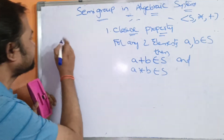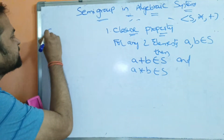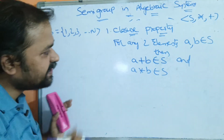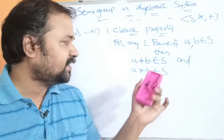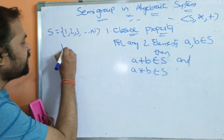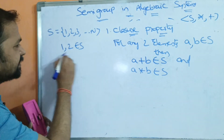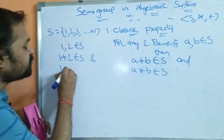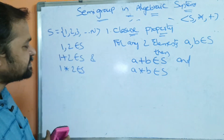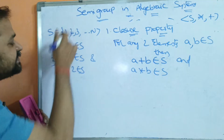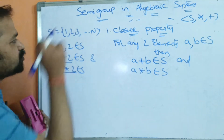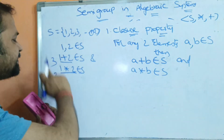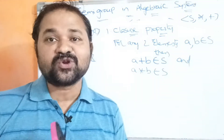Let us take an example. Let we have a set of numbers from 1 to N. Closure property means we have to take only two elements from the set. Let us take 1 and 2 from the set, so 1 comma 2 belongs to S. Then 1 plus 2 equals 3, which is present in the set, and 1 star 2 equals 2, which is also present in the set. So we can say that closure property is satisfied.